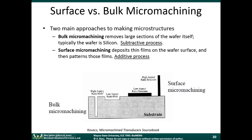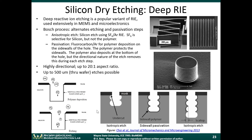Deep RIE is something called the Bosch process. It alternates etching and passivation steps, and by doing so, allows you to get very tall structures by drilling deep into the silicon. The first step is an anisotropic etch — the RIE step using SF6 gas combined with argon as a carrier gas. You use RIE to drill a bit into the silicon. SF6 is selective for silicon but not the polymer, which we'll get to in a second.